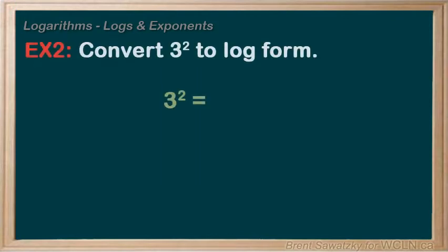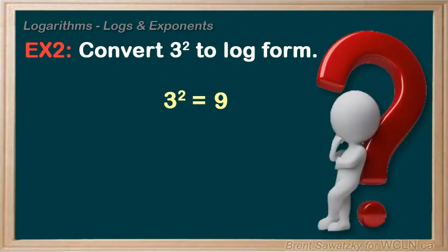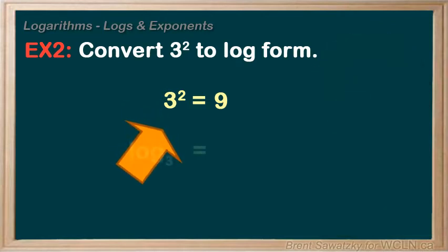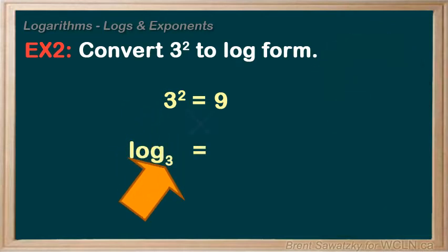3 to the power of 2 equals—well, 3 times 3 is 9. Now converting this to log form, pause and see if you can think of this one. Same base, that is the 3, and switching the 2 and the 9, we would have log base 3 of 9 equals 2.